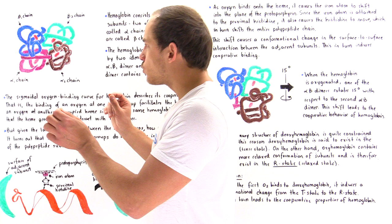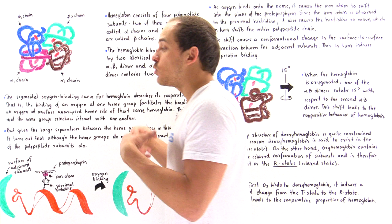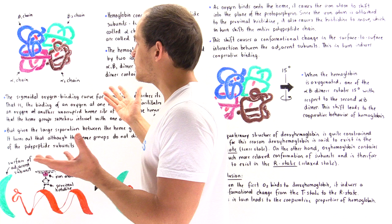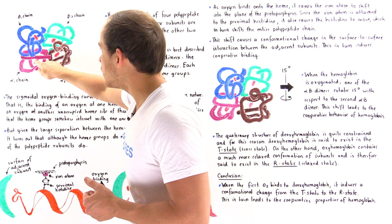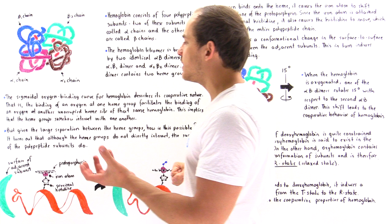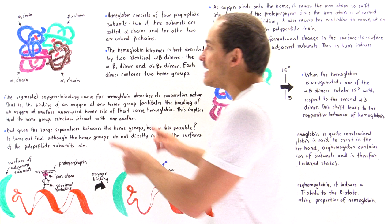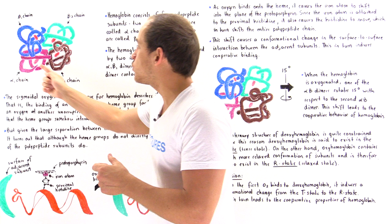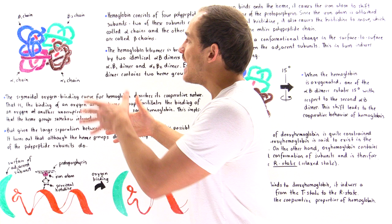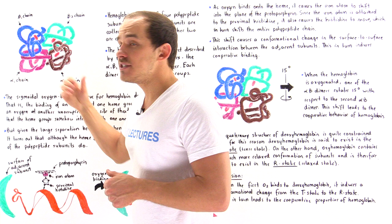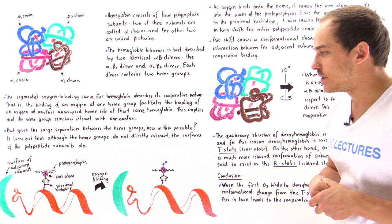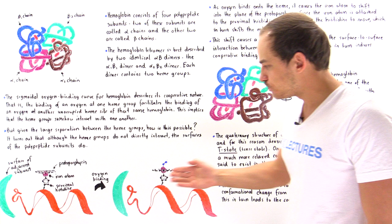The four heme groups in hemoglobin somehow cooperate with one another. But examining the structure of hemoglobin, we see that the four heme groups — the red structures within each polypeptide chain — are actually separated by a certain distance. This implies the heme groups do not interact with one another in a direct fashion. Instead, the surfaces between the polypeptide chains interact with one another. More specifically, it's the surface-to-surface interaction between the two dimers that causes the cooperative behavior of hemoglobin.